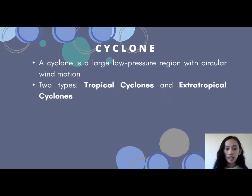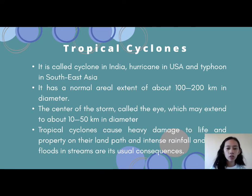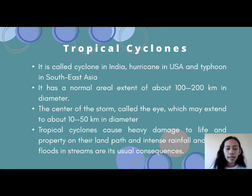The next weather system is the cyclone — a large, low-pressure region with circular wind motion. Cyclone is also known as typhoon here in our country. Cyclones have two types: tropical cyclones and extra-tropical cyclones. Tropical cyclones are called cyclones in India, hurricanes in the USA, and typhoons in Southeast Asia. They have a normal aerial extent of about 100 to 200 km in diameter. The center of the storm is called the eye, which may extend about 10 to 50 km in diameter. Tropical cyclones cause heavy damage to life and property upon landfall, and intense rainfall, floods, and stream flow are usual consequences.